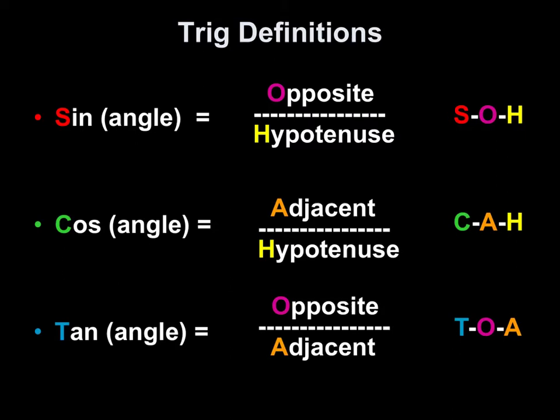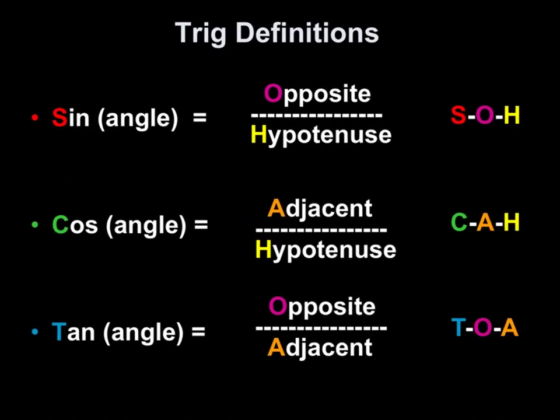To kind of go back to what we've been working on, the trig definitions are sine, cosine, and tangent, so these should look familiar. Notice that the tangent is the only function that we have that does not utilize the hypotenuse as a part of the problem. So just be aware of that when you're solving. That's a helpful way to identify.